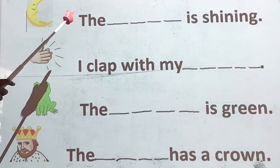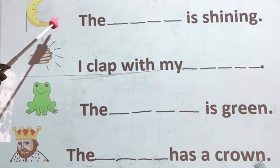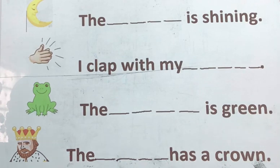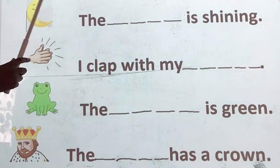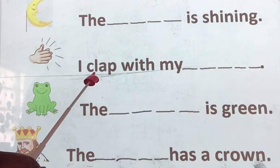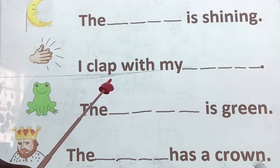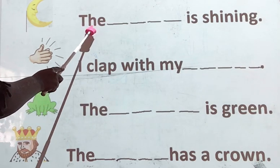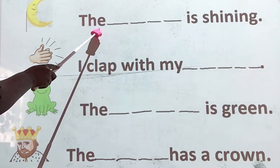Now first, remember the pictures are the words that will go in the missing space — in the blank space. When reading a sentence, take note of the tricky words. The is a tricky word.